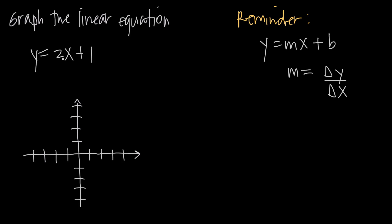This particular equation, y equals 2x plus 1, is already given to us in what we call slope-intercept form. Slope-intercept form is y equals mx plus b, where m is the slope of the line — meaning the degree to which the line slants right or left — and b is the point where the line intersects the y-axis. These are two really critical pieces of information. If we have nothing but the slope and the y-intercept, we can use those two pieces of information to graph the line.